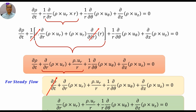We can further simplify according to given conditions. For two-dimensional flow, we consider any two directions in which flow is occurring and cancel out the third. This is how we derive the continuity equation in polar coordinates. Thank you friends — I hope you understand. If you like it, please share and subscribe.